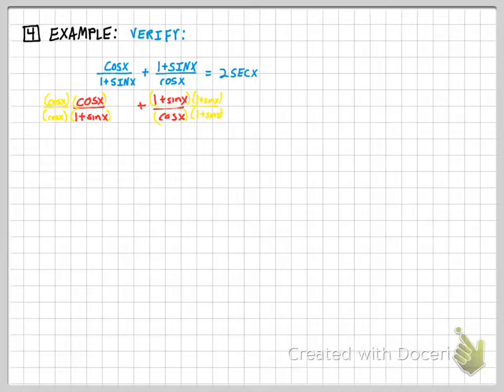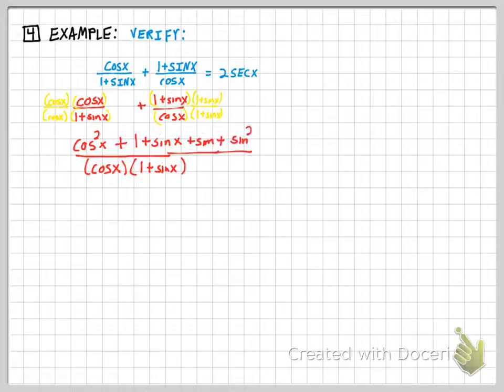By doing that, I've come up with an expression that has a common denominator. So let's start off with what that common denominator would be. That common denominator would be cosine x times 1 plus sine x. And my numerator would be cosine squared, plus, and then I have a little problem where I have to FOIL. So I'm going to have 1 plus sine x plus another sine x, plus sine squared.